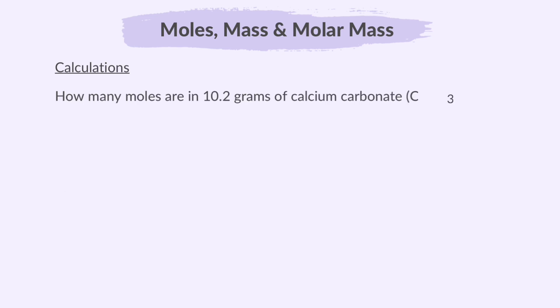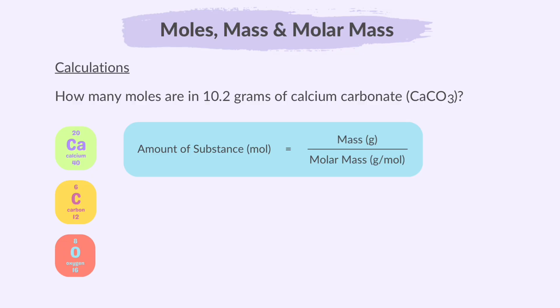Next example, how many moles are in 10.2 grams of calcium carbonate, CaCO3? In the previous example, we were asked to find the mass. In this example, we need to find the moles. Since the previous example was an element, the molar mass was the same as its relative atomic mass. In this example, we are calculating the number of moles in a compound, so the molar mass will be the relative molecular mass.